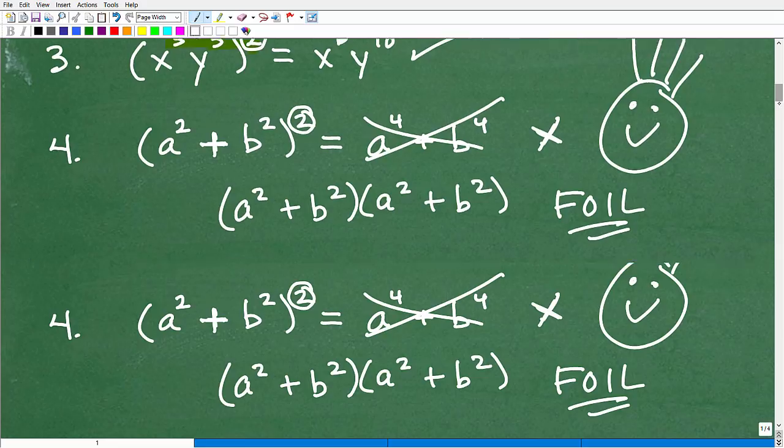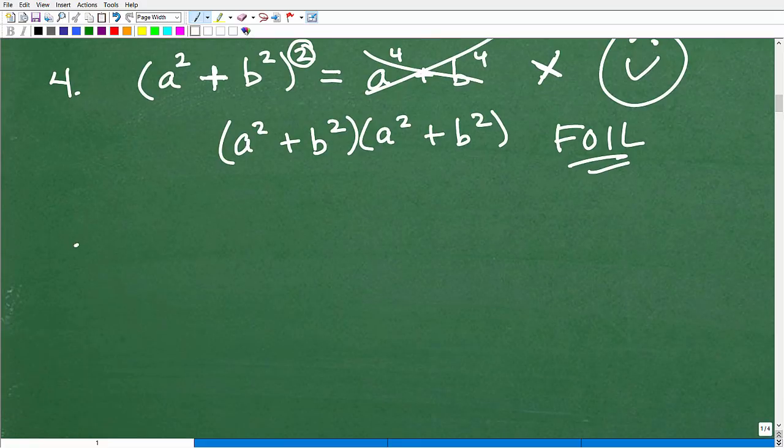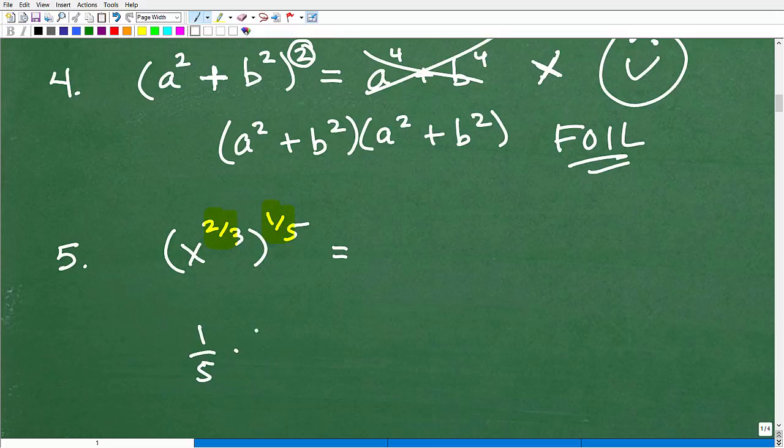Now I mentioned fractions. Let me actually put one more problem here. How about this guy? Let's say x to the two-thirds to the one-fifth power. What do you think about this? Well the pattern still continues. This is a number and this is a number. So fractions are numbers too. We've got to like them just like the whole numbers and positive numbers. So we just multiply one-fifth times two-thirds. And hopefully you remember one-fifth times two-thirds is going to be two-fifteenths. So that's x to the two-fifteenths power.